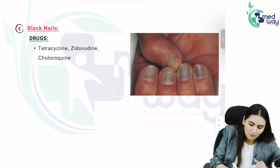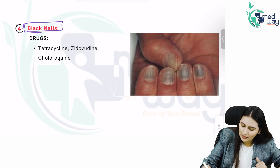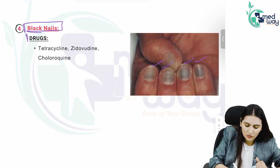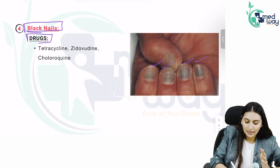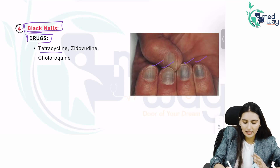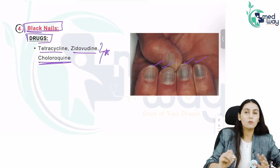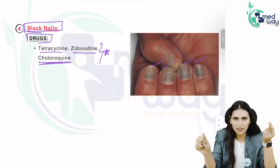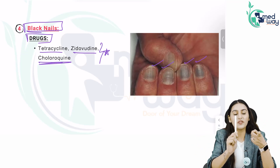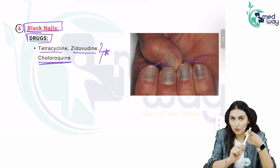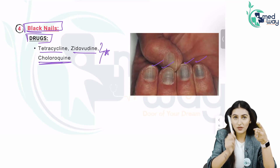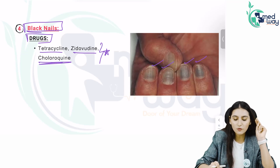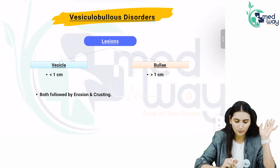The next one is black nails — the nails are black. The cause is drugs: it can be tetracycline, zidovudine, or chloroquine. These are the three drugs that can give you black nails. So we have seen white nail, blue nail, yellow nail syndrome, black nails, and green nails because of pseudomonas infection.